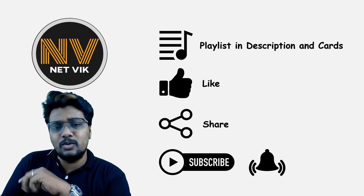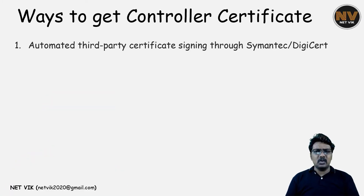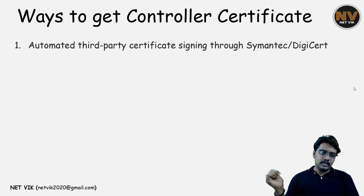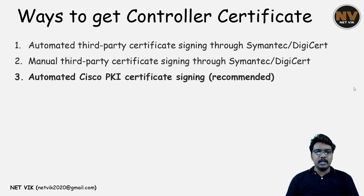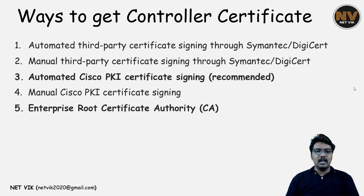Also hit the notification bell icon so my effort will reach you on time. We already know that all of our controller components are only virtual devices and they will get the root CA in their OS itself. But to get a signed certificate, they need to go to a certificate authority, a CA. There are multiple options available for the Cisco SD-WAN solution: automated Symantec or DigiCert based signing, manual Symantec or DigiCert based model, automated Cisco PKI based CA, manual Cisco PKI model, and finally the customer-owned enterprise certificate authority.